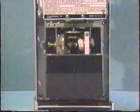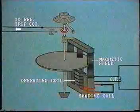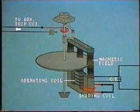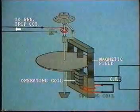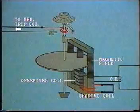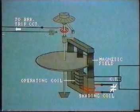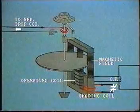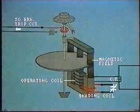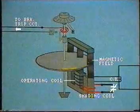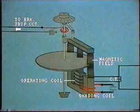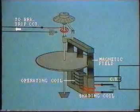The directional element controls tripping by superimposing its operation on that of the overcurrent relay. The time overcurrent relay is fitted with a shorted shading coil on one leg of the electromagnet to provide the driving force. The shorting circuit is fitted with a contact which is operated by the directional element. When current flow is in the tripping direction, this contact remains closed and the overcurrent relay can operate. However, if current flow reverses, then the directional element opens the contact, so preventing operation of the time overcurrent relay.